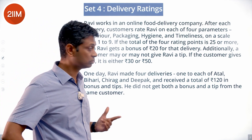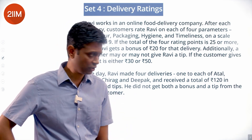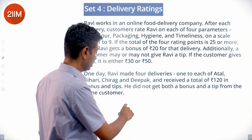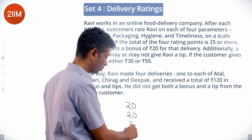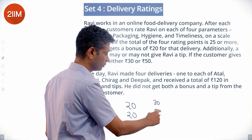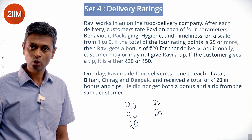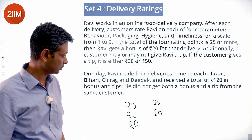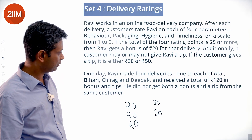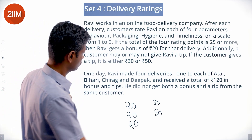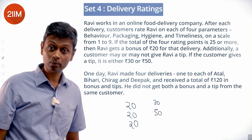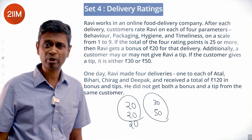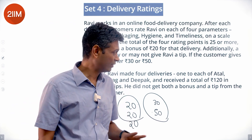He did not get both a bonus and a tip from the same customer. So across four deliveries he got some combination of 20s (bonuses), 30s, and 50s (tips) — four payments totaling 120. For example: 50+50+20+0 = 120, or 50+30+20+20 = 120. So two bonuses and two tips is one valid scenario, and he never got both from the same customer.